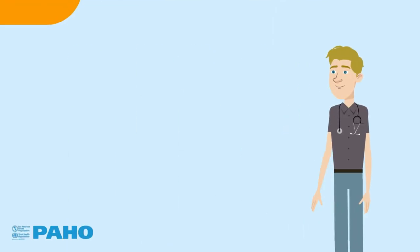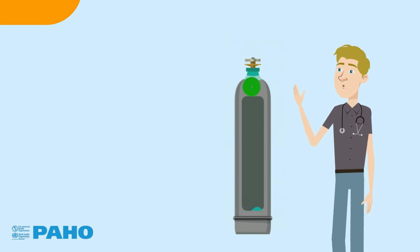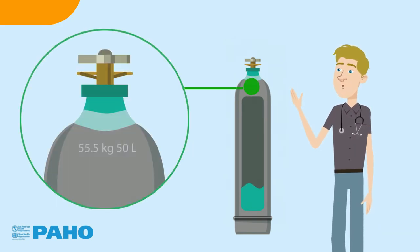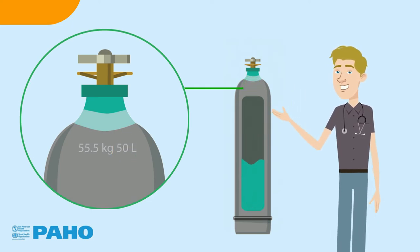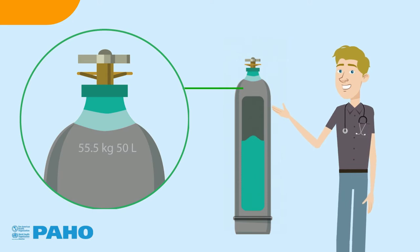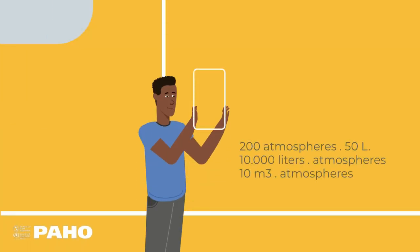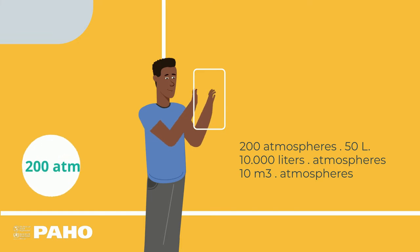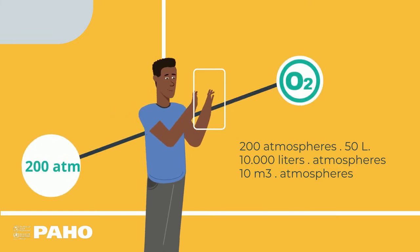Another important piece of information is the internal volume of the cylinder, which is equivalent to the volume of water that it can contain. This amount is usually expressed in liters and is written on the body of the cylinder. Combined with the internal pressure, you can use it to calculate the amount of oxygen that can be stored in the cylinder.